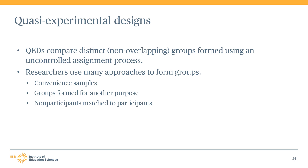Group formation in QEDs can occur before or after collecting outcome data, and researchers can use many different approaches to form groups, including convenience samples, groups formed for another purpose, or using matching techniques to match participants to similar non-participants.